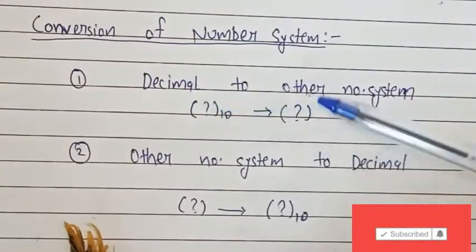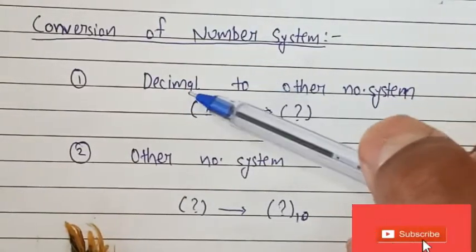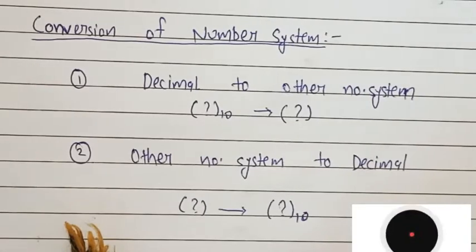Before going to decimal to binary, first we see what is the basic approach of decimal to other systems. So the simple approach is that the decimal division operation is performed successfully.